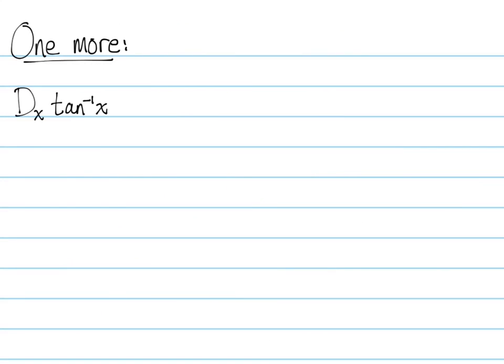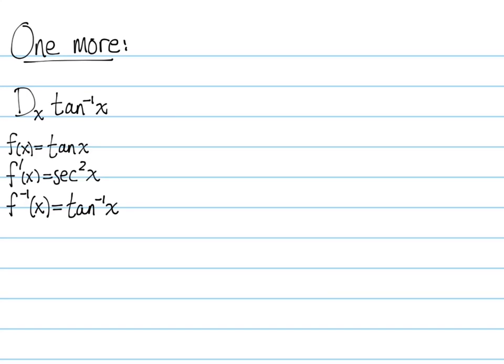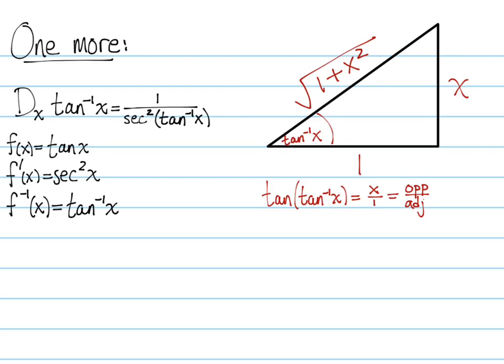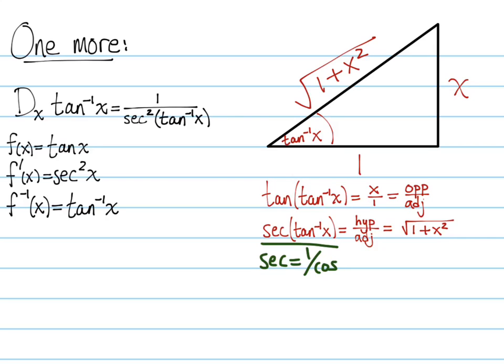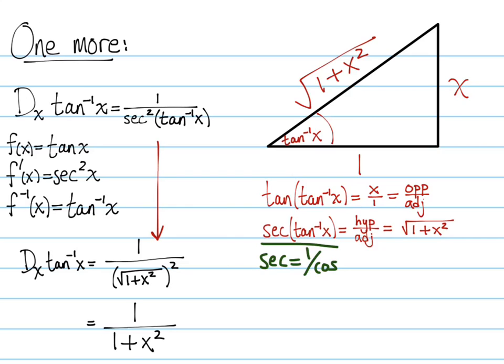Let's take the derivative of arc tangent. F(x) is tangent, f prime is secant squared, and f inverse is arc tangent. So the derivative should be 1 over secant squared of arc tangent of x. Looking at our triangle with arc tangent in the corner and labeling the sides, secant is hypotenuse over adjacent — since it's 1 over cosine and cosine is adjacent over hypotenuse — so hypotenuse over adjacent is the square root of 1 plus x squared. Squaring secant gives us 1 plus x squared, so the derivative of arc tangent is 1 over 1 plus x squared.